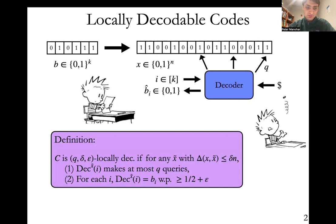Formally, we say that a code C is a (q, delta, epsilon)-locally decodable code if, when given access to any x-tilde that is obtained from taking the true encoding x of the message b and flipping its bits in at most delta n coordinates, then the decoding algorithm needs to have the following properties. First, the decoding algorithm on input i should be making at most q queries to x-tilde. And secondly, regardless of the input i, the decoder should output b_i with probability a bit better than a half, say half plus epsilon. Here you should treat delta and epsilon as constants.